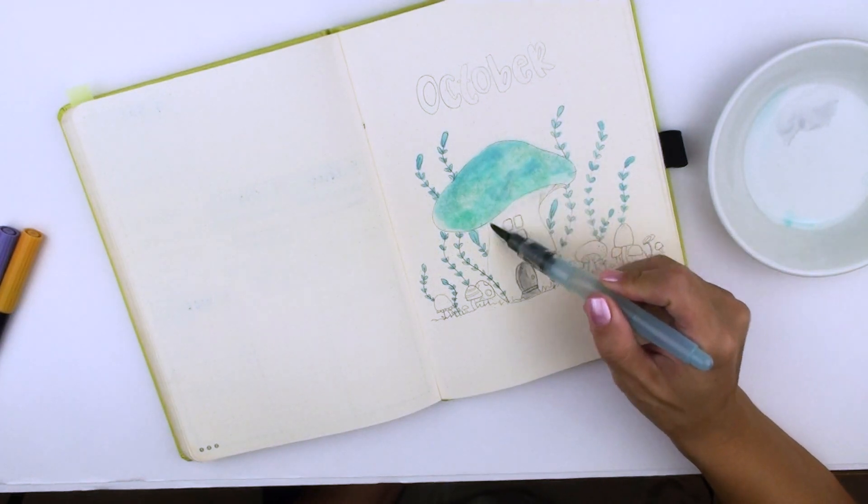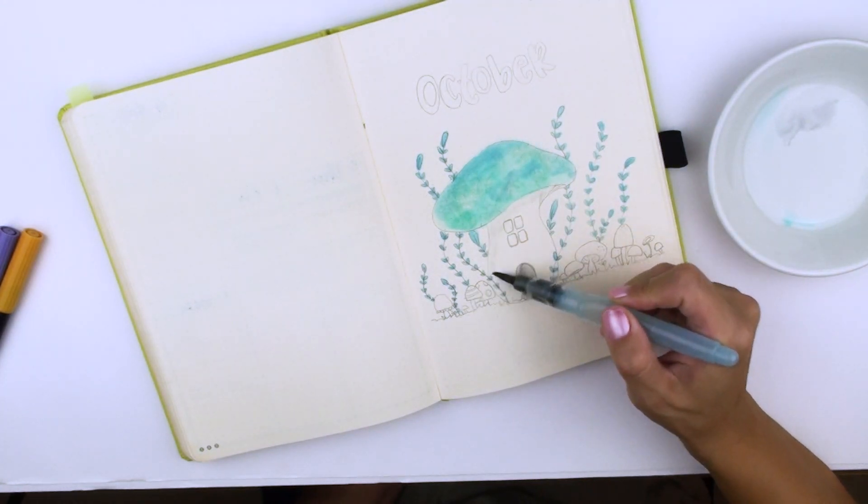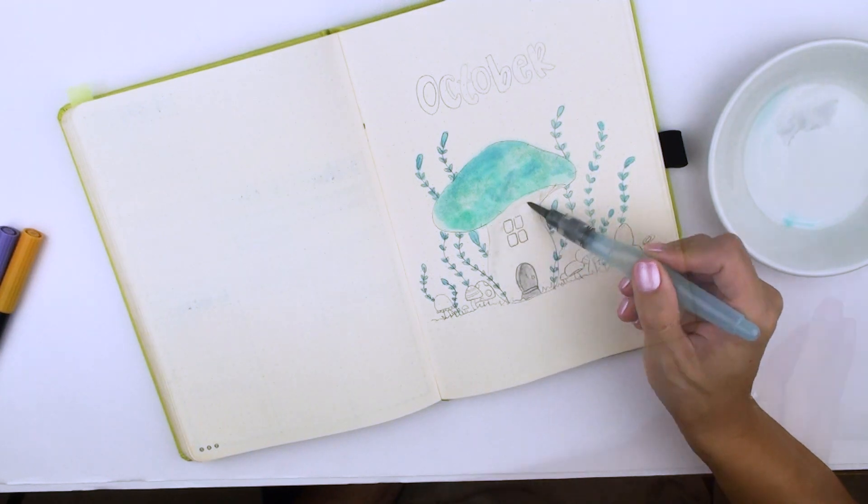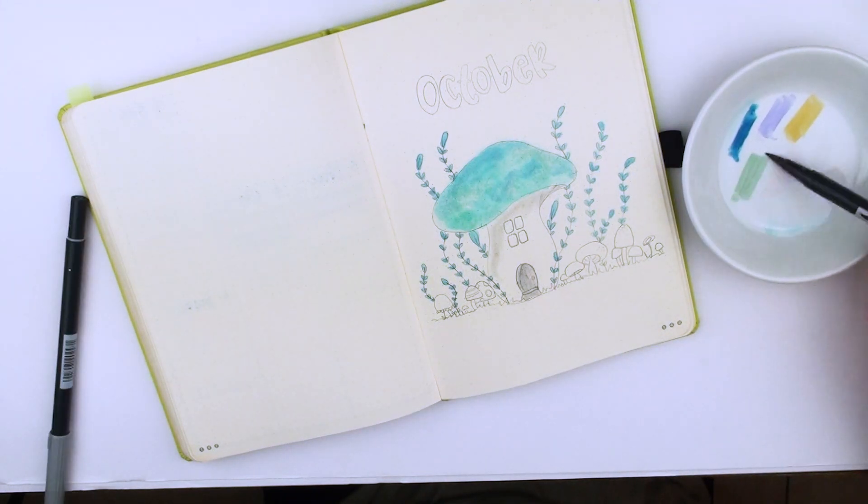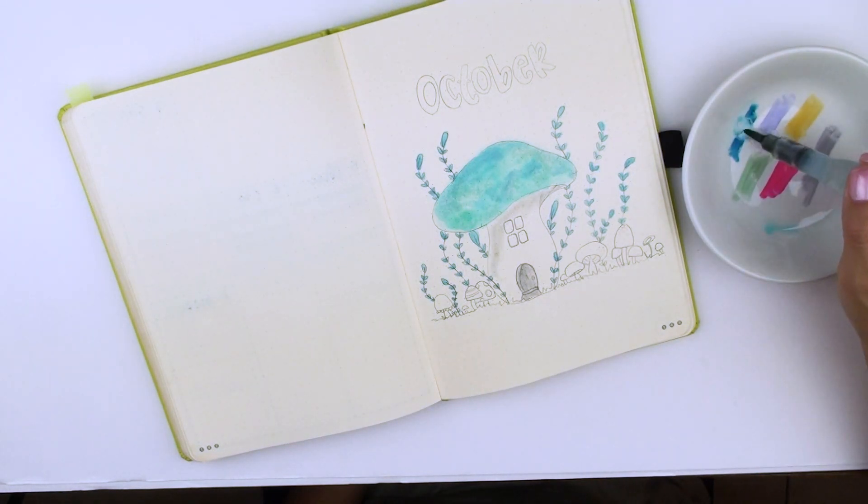The theme I went with for October is mushrooms. I find mushrooms cute and very tasty, and I'm really happy with the way my pages stand out. As always, we start with the cover page of the month.